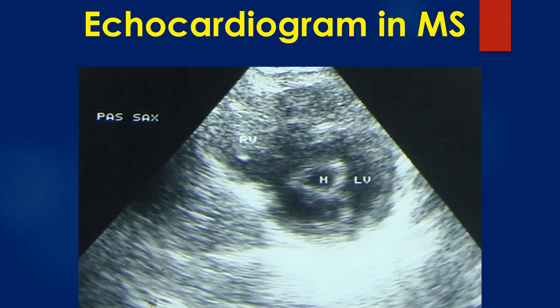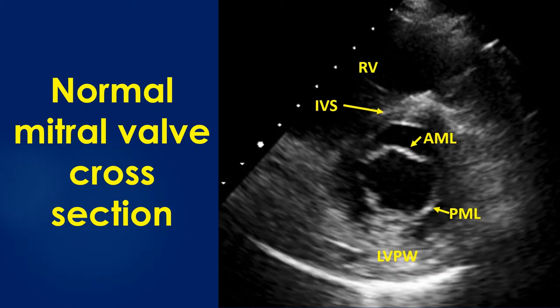The parasternal short axis view in mitral stenosis shows the fish mouth appearance of the mitral orifice in cross section. A normal mitral valve cross section is shown for comparison, with anterior and posterior mitral leaflets widely separated. Scallops of the mitral leaflets are also visible, more clearly in the posterior leaflet.